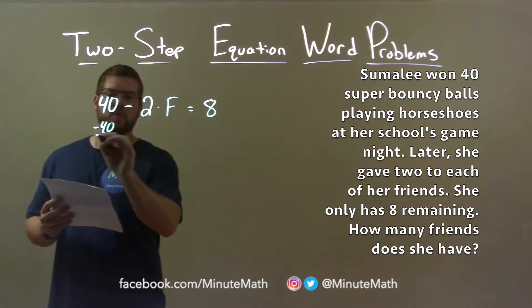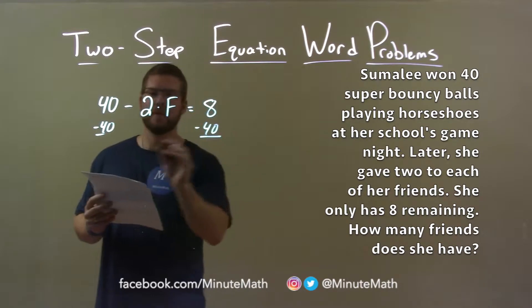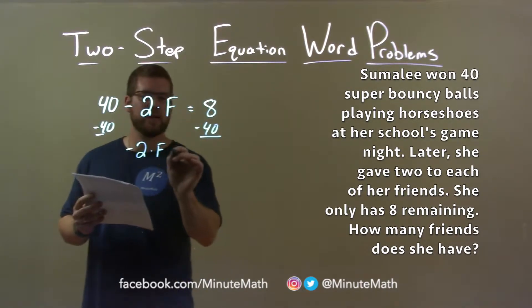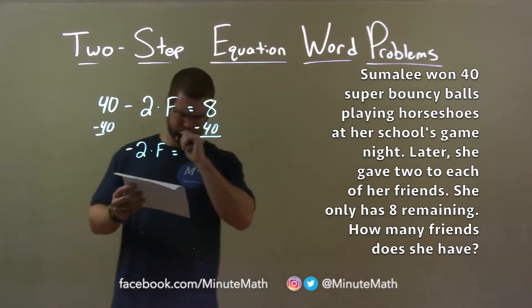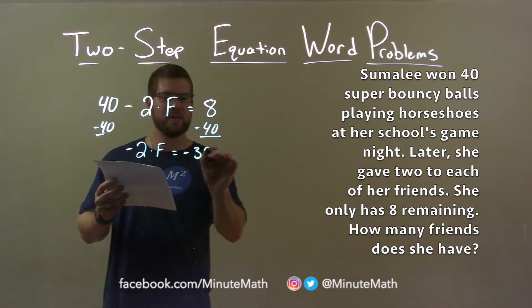I subtract 40 from both sides here, and I'm left with negative two times f equals eight minus 40, which is negative 32.